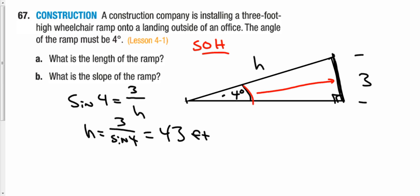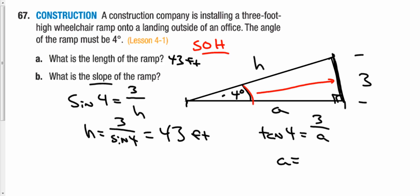That's the answer to part a — the ramp length is 43 feet. For slope, remember slope is rise over run, so I need to find the run, which is the adjacent side. Using tangent of four degrees equals opposite over adjacent, the adjacent side is about 42.9 feet. So rise over run gives us three divided by 42.9, a slope of about 0.07.